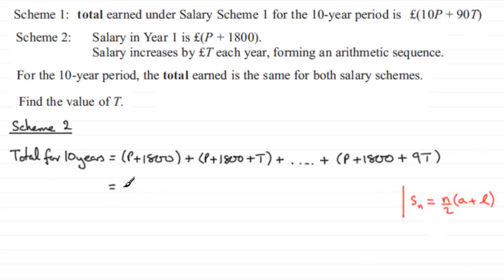This equals S10, so n is 10. We've got 10 divided by 2, all multiplied by the first term, which is P plus 1800, plus the last term, which we just worked out as P plus 1800 plus 9T.